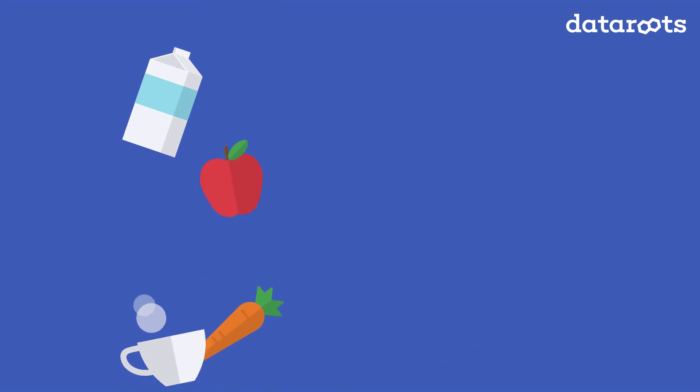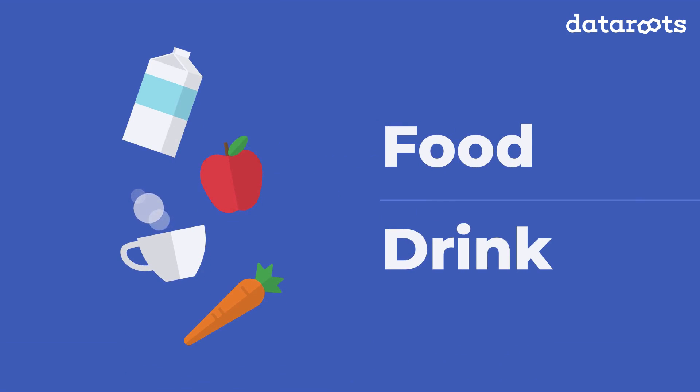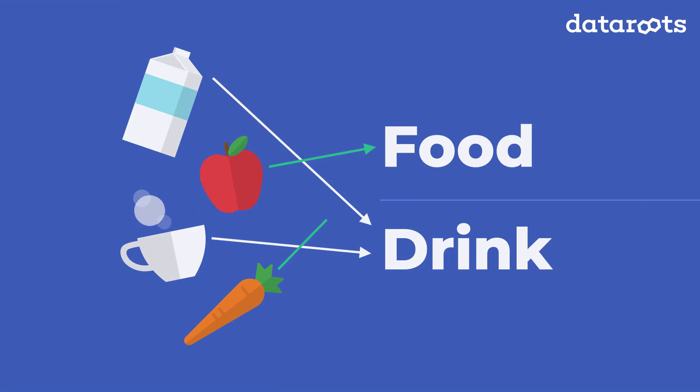In supervised learning, the idea is that you know what comes in and what should come out. These models create a link between the inputs and the outputs.